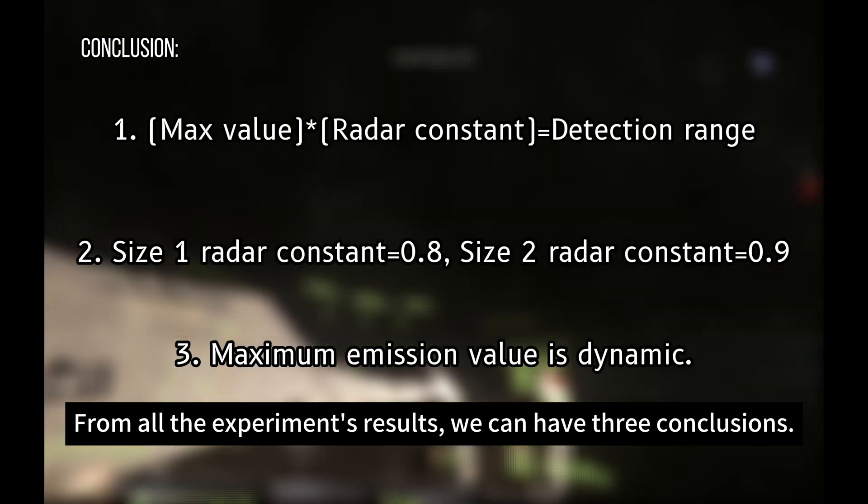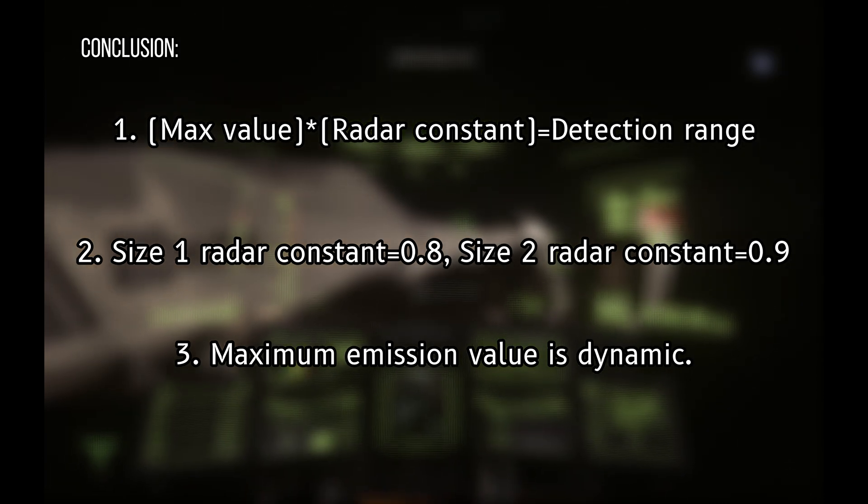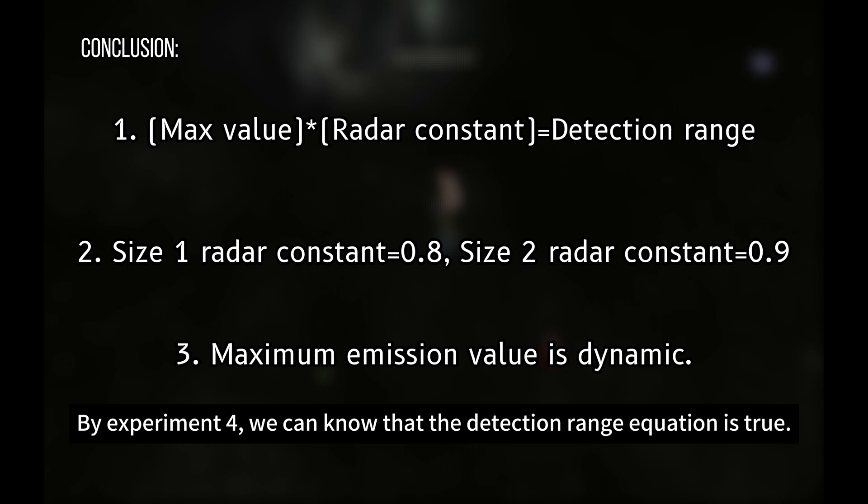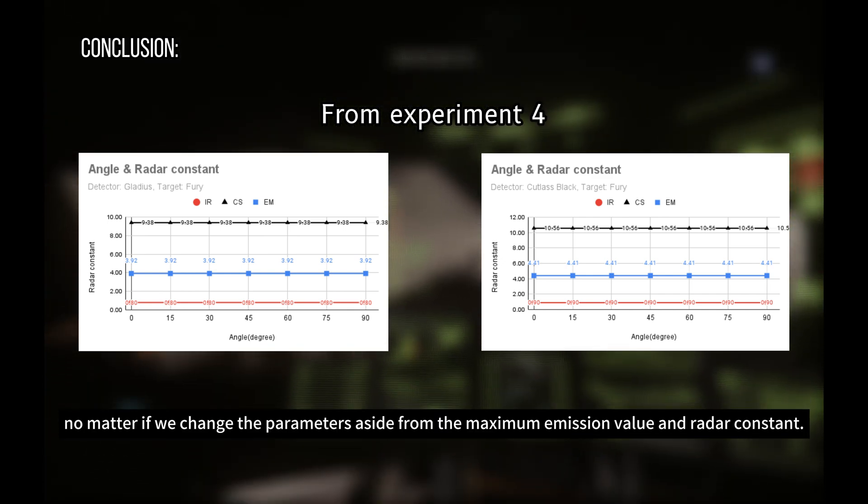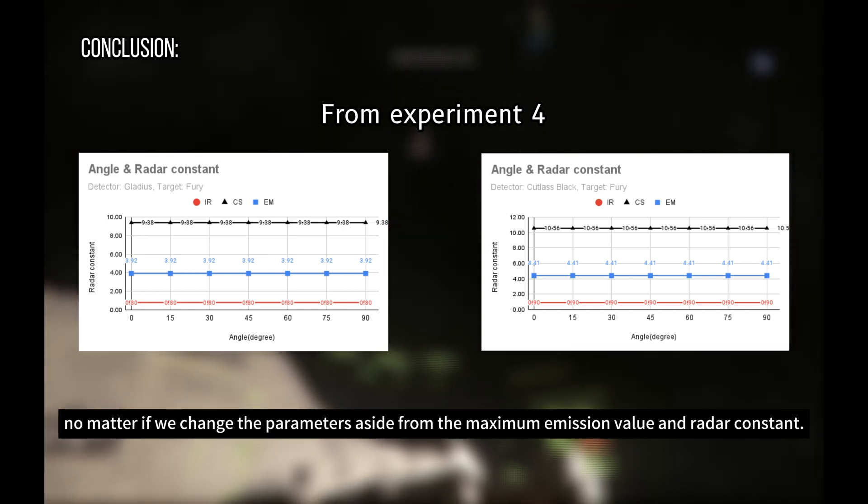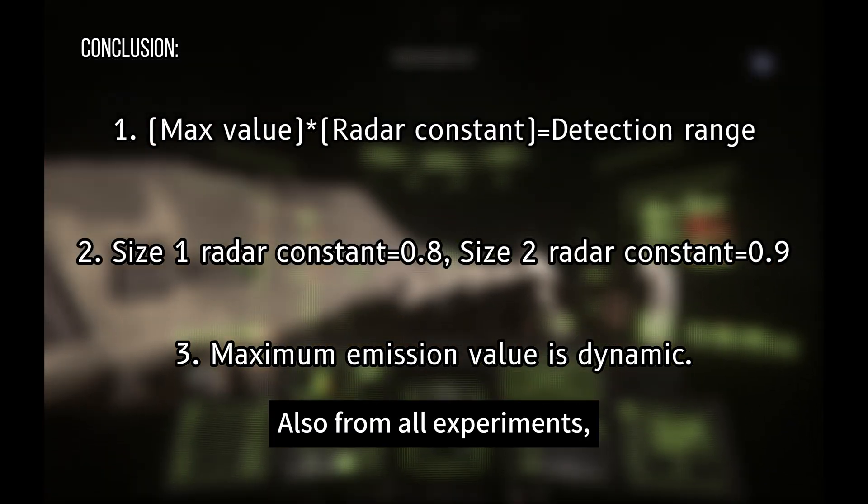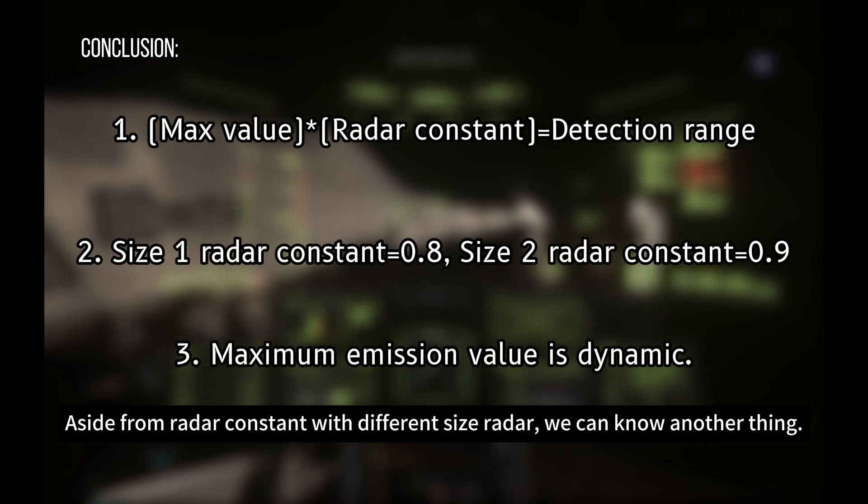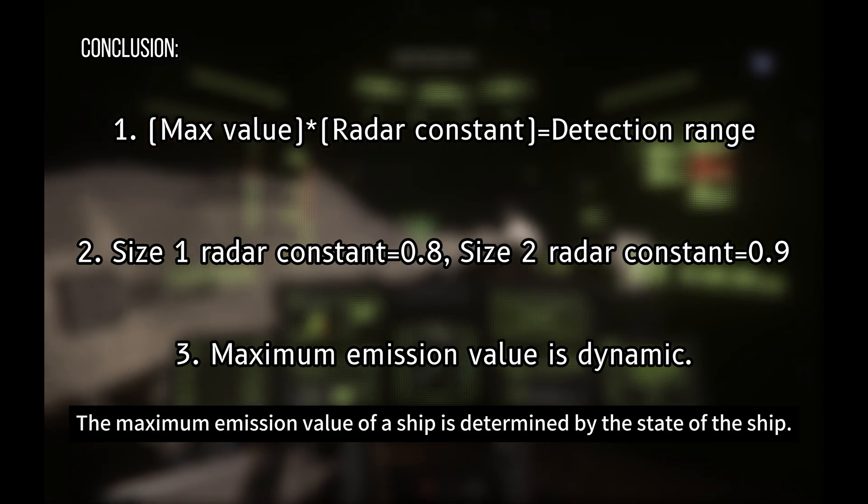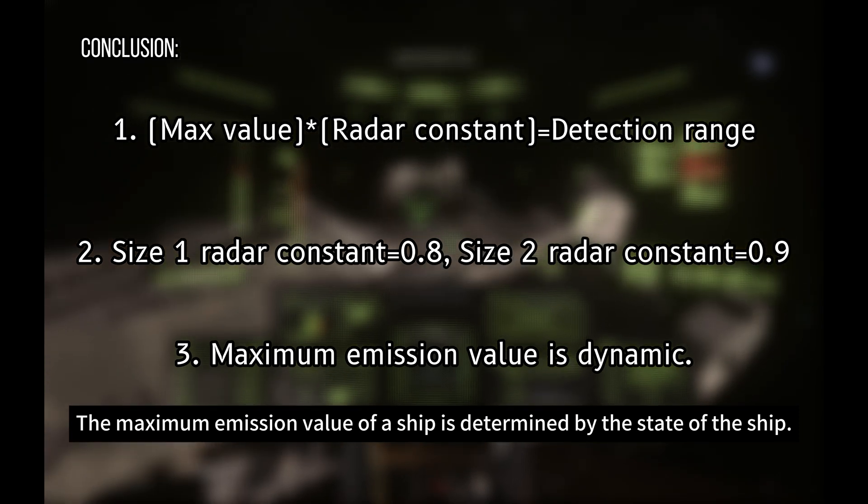From all the experiment's results, we can have three conclusions. By experiment 4, we can know that the detection range equation is true. The detection range equation predicts we should get a constant no matter if we change the parameters aside from the maximum emission value and the radar constant. Also, from all experiments, we know that the size 1 radar has a 0.8 radar constant and a 0.9 radar constant for the size 2 radar. Aside from radar constant with different size radars, we can know another thing. The maximum emission value of a ship is determined by the state of the ship.